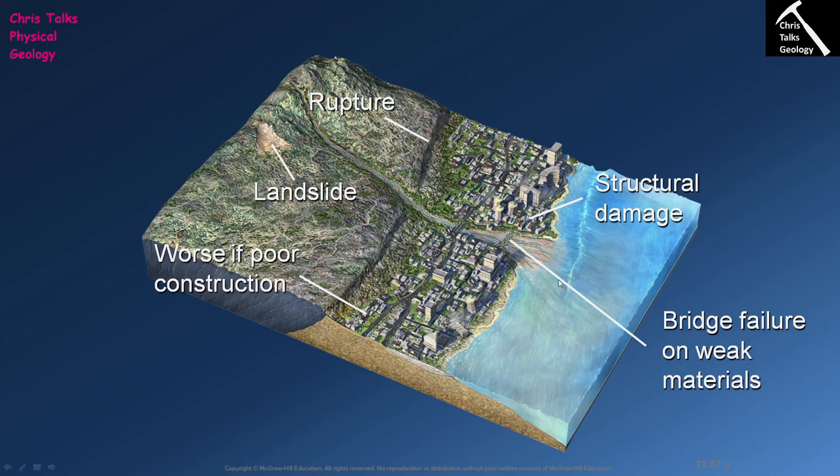During earthquakes it's not uncommon for more loosely consolidated material to move due to the shaking. Think of a situation where you have a cubic meter of jello and a cubic meter of granite. You punch the jello on one side and it's going to move — you're imparting force into the jello and it moves in response. The same thing will happen with loosely consolidated sediment as the seismic waves pass through it.